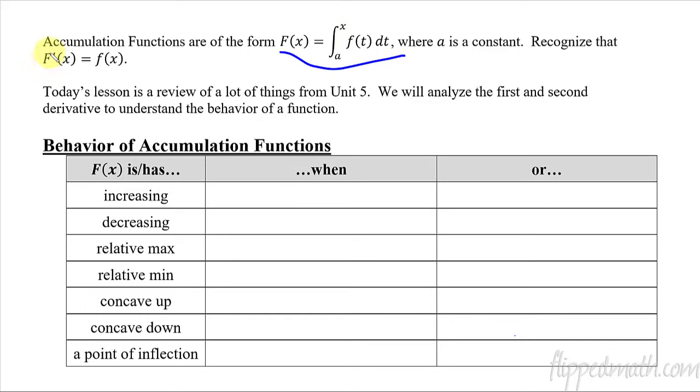And just remember that its derivative, so the derivative of capital F, is equal to little f. So this thing gets plugged in, and then you might have to use chain rule if it was something more than just an x, you'd have to times it by the derivative of that upper bound. So we've already covered all that.